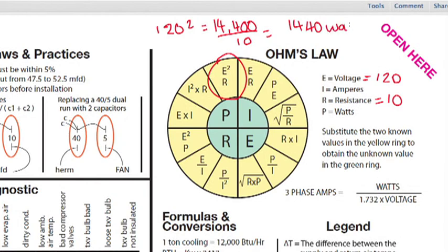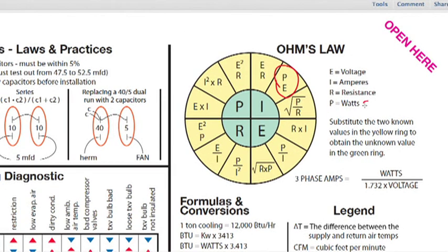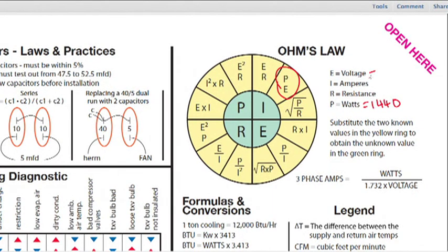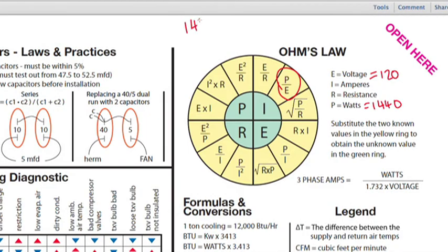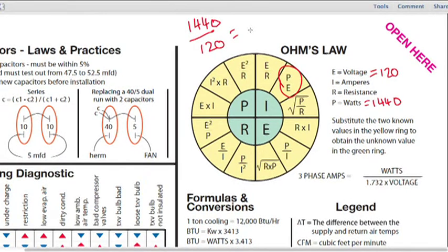Now, if we wanted to convert those watts into amps, we could then come to this side of Ohm's Law. Our known values are now watts, which are 1,440, and voltage, which is 120. Take 1,440, divide it by 120, and we have our answer here in amps.